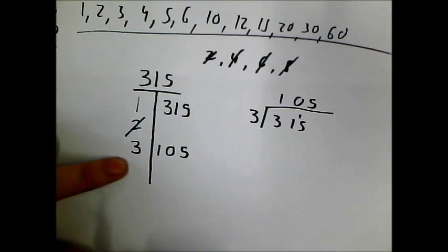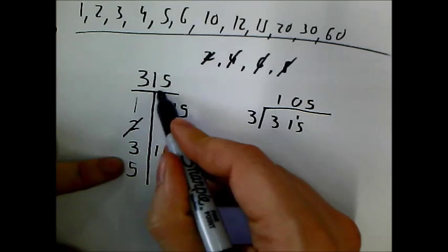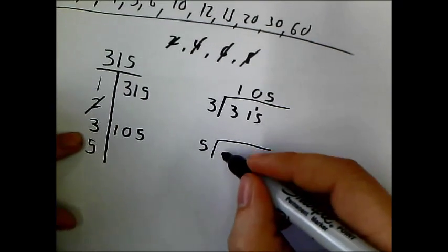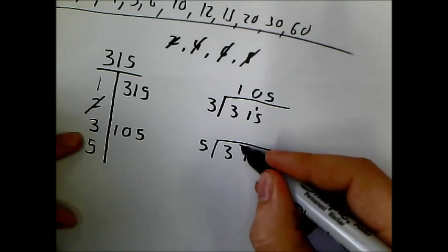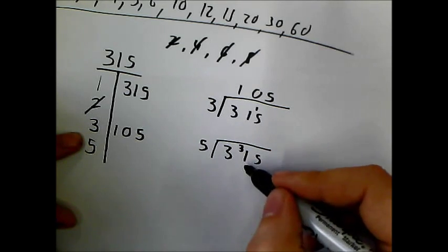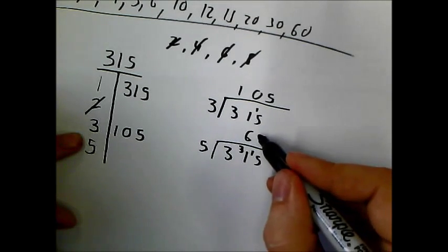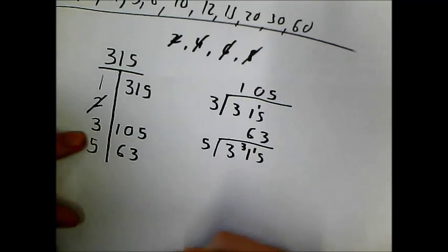I can ignore 4 because 2 isn't a factor. 5 will go into my number as it ends in 5 or 0. So again, I can do a quick bus stop method here to help me. 5s into 3 don't go. Carry the 3. 5s into 30 goes 6 times. Remain the 1. 5s into 15 goes 3 times. So that's 63.